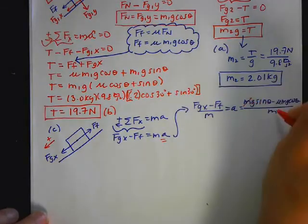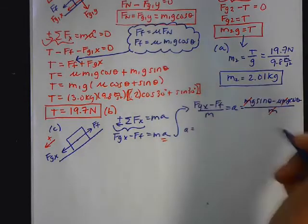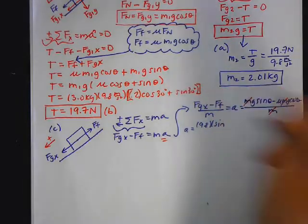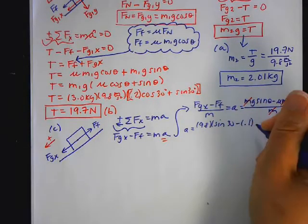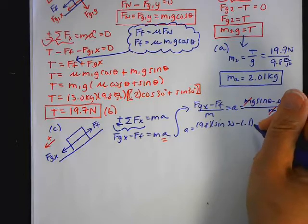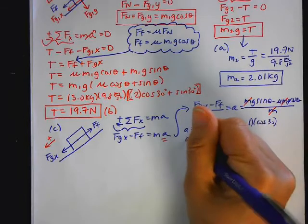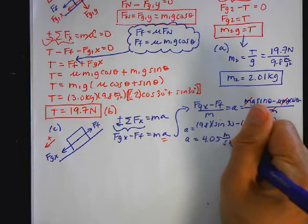My M's cancel out. So now I'll substitute in my values. So A is going to be 9.8 times the sine of 30 minus 0.1. Now it's moving, so we're using our kinetic friction times the cosine of 30. So when I do all this, the acceleration comes out to be 4.05 meters per second squared.